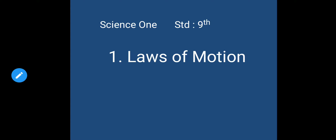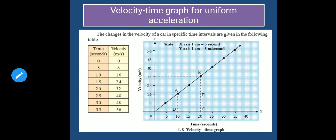Velocity in meters per second: 0, 8, 16, 24, 32, 40, 48 and 56. If you see the table carefully, the velocity changes by equal amounts in equal time intervals. It means after every 5 seconds, velocity changes by 8 meters per second. See the difference: 0, 8, 16 — the difference is 8 each time.